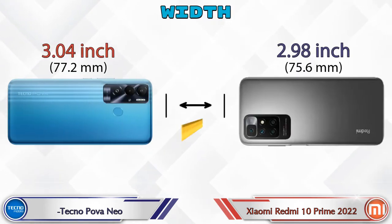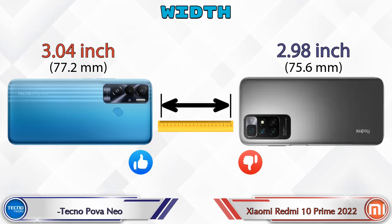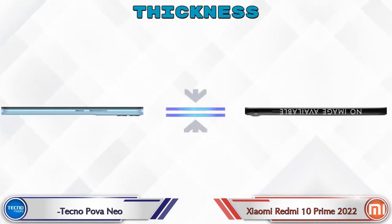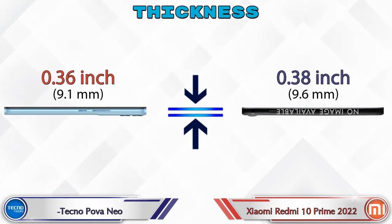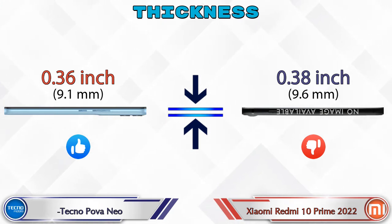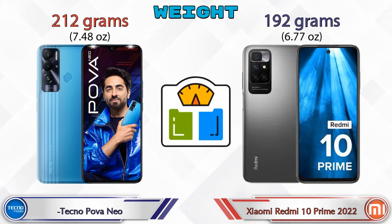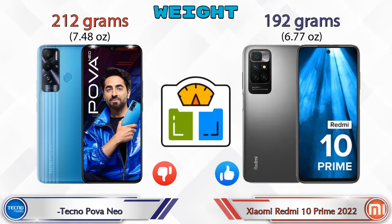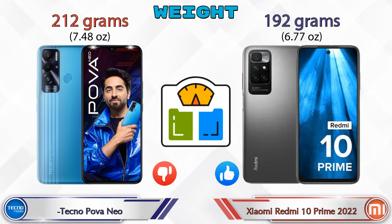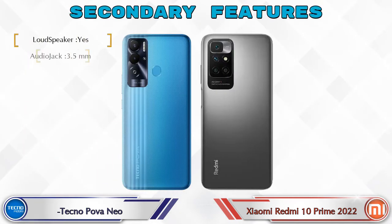Width: Pova Neo is 3.04 inches and Redmi 10 Prime 2022 is 2.98 inches, which is less than Pova Neo. Thickness: Pova Neo is 0.36 inches and Redmi 10 Prime 2022 is 0.38 inches, which is bigger than Pova Neo. Weight: Pova Neo is 212 grams and Redmi 10 Prime 2022 is 192 grams.